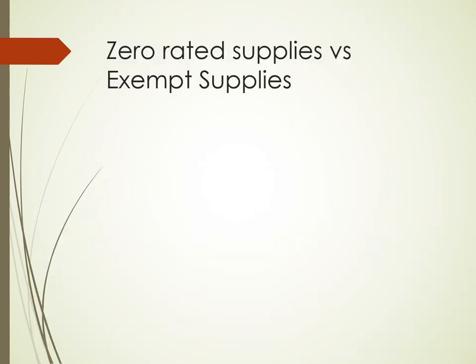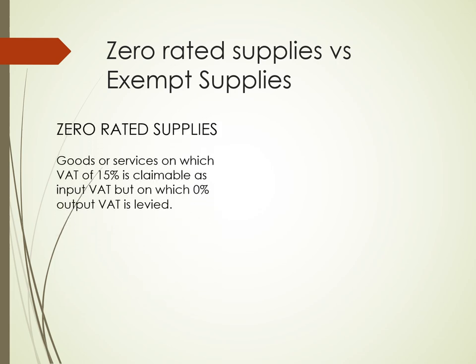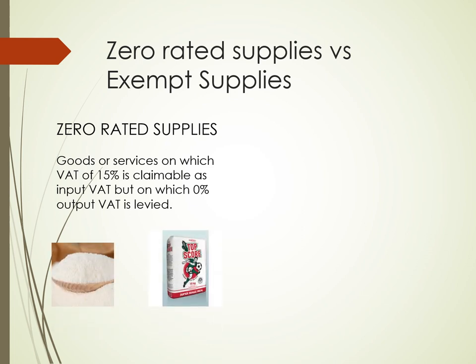Let's look at zero rated and exempt supplies in more detail. Zero rated supplies are supplies of goods or services on which the supplier can claim input VAT of 15%, but on which output VAT is levied at a rate of 0%. For example, take a supplier of mahango or topscore flour. The supplier will charge 0% output VAT when supplying the product. However, the supplier will be able to claim any input VAT on any item that was used to make that supply — for instance, the supplier will be able to claim 15% as input VAT on the packaging.